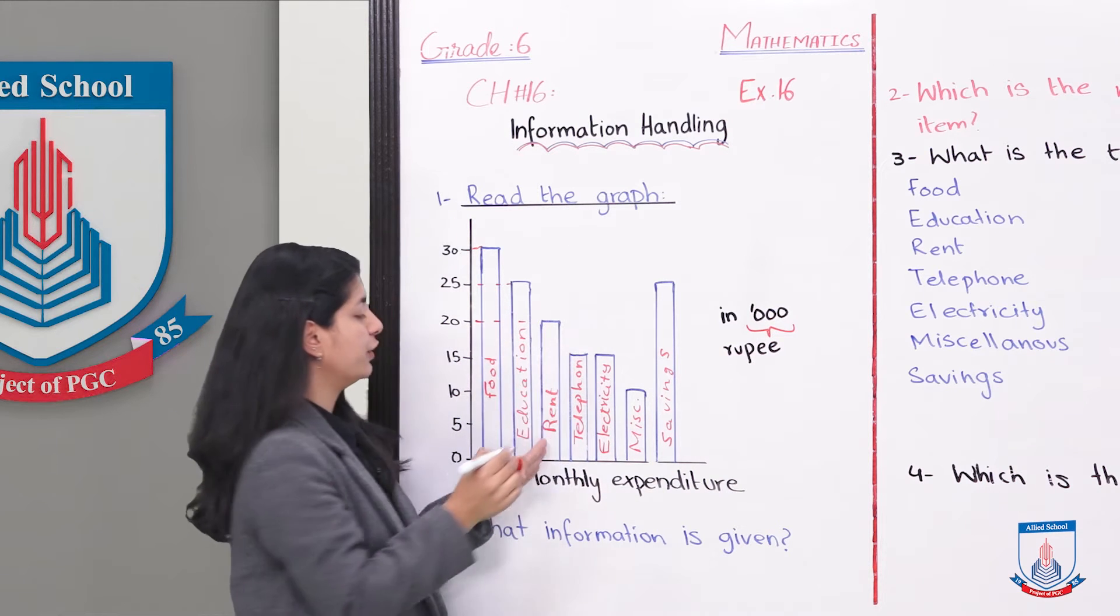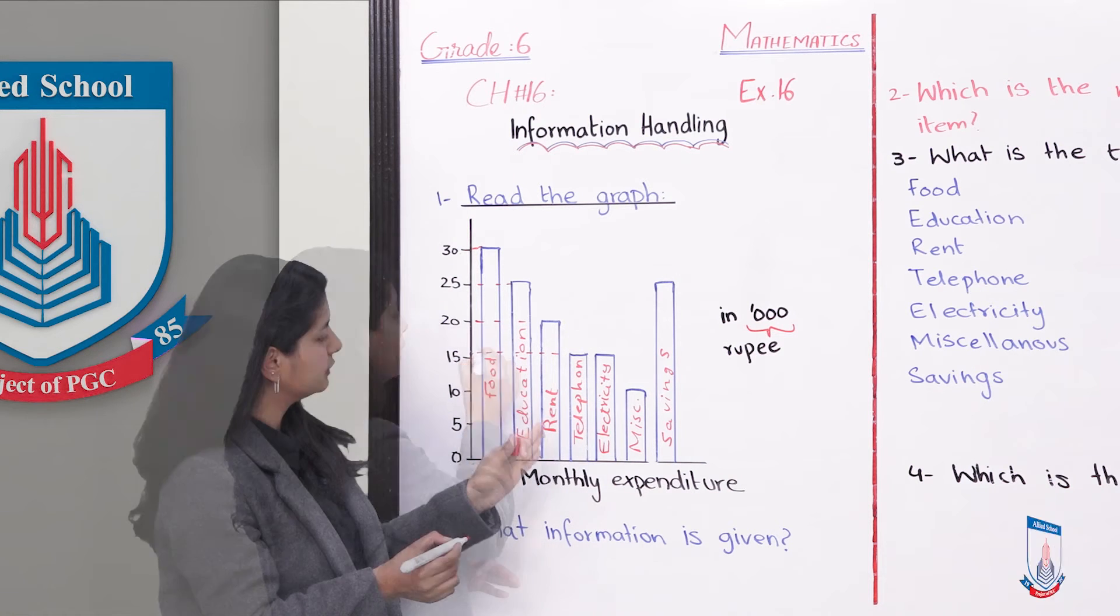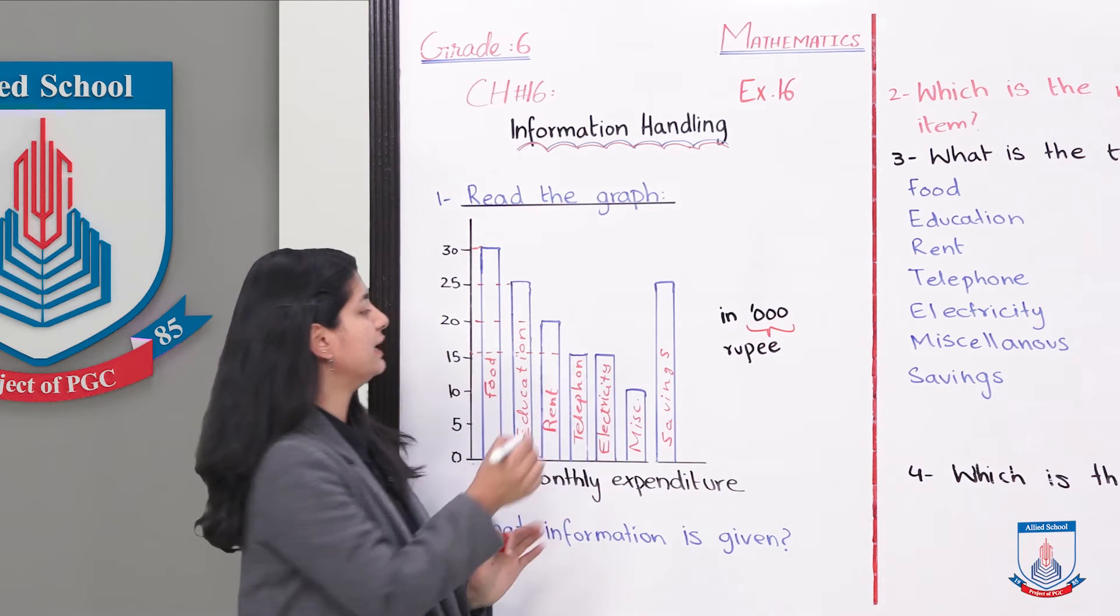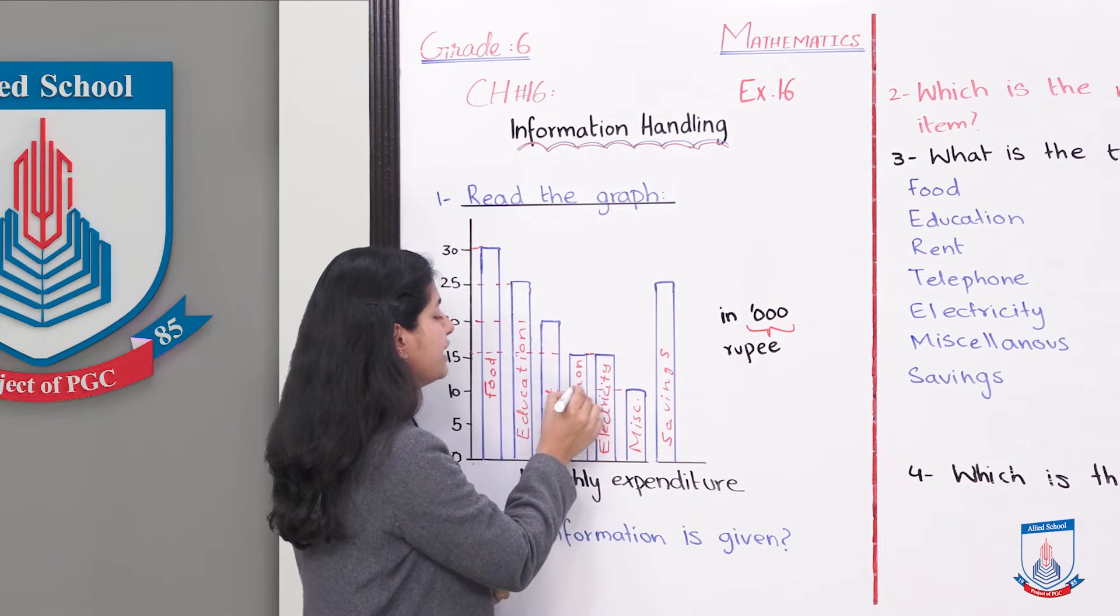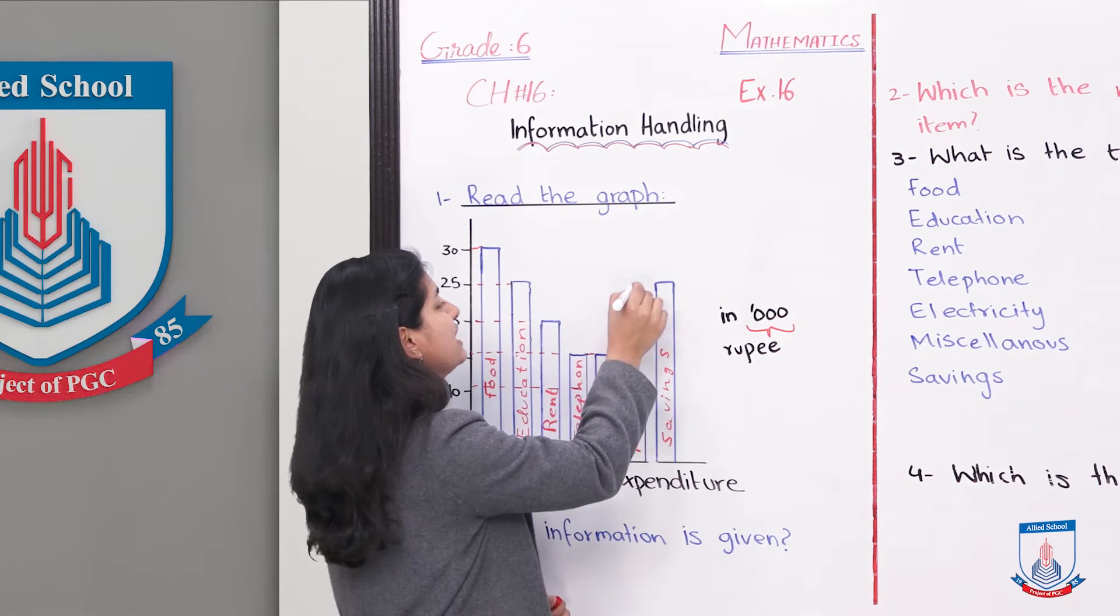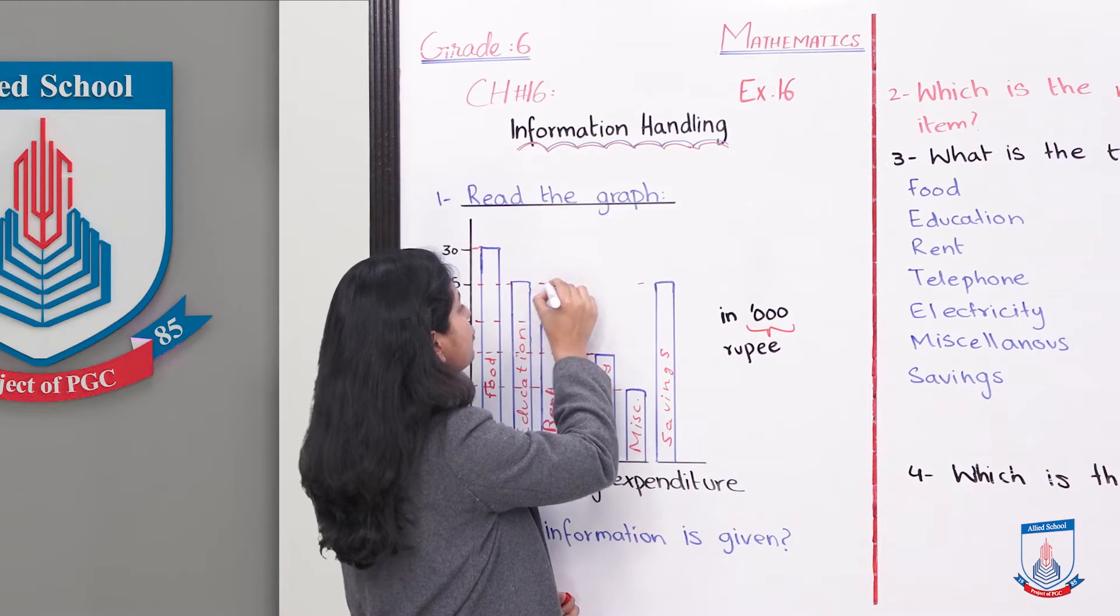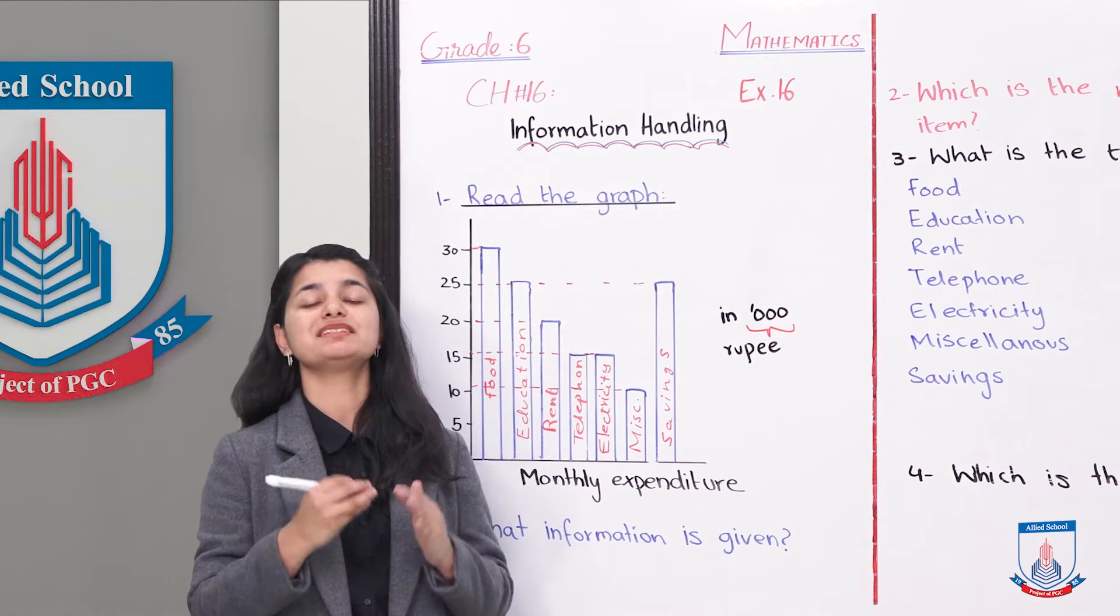Similarly, 20 for rent, then 15 for telephone and electricity, and then our miscellaneous expenses are 10,000. Lastly, our savings are 25,000. In this way, we have written all the details.